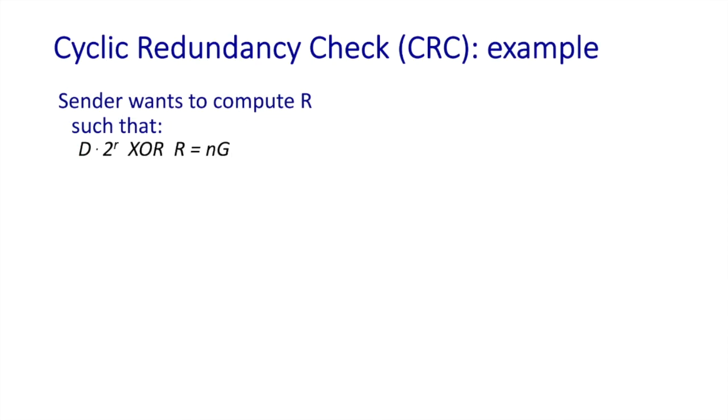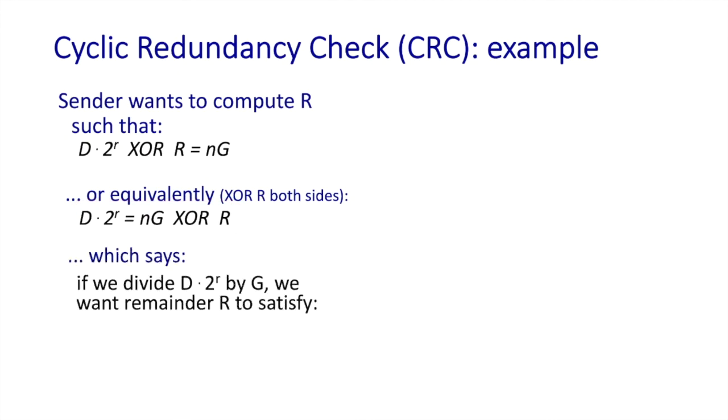But we still have one important question to answer. How does the sender compute r? Well, we know that the sender wants to compute r such that the bit pattern sent is exactly divisible by G. Well, let's XOR into each side of this equation, giving this, which is really just a mathematical way of saying that if we divide this quantity here, d times 2 to the r by G, r is the remainder, and this then gives us an algorithm for computing r.